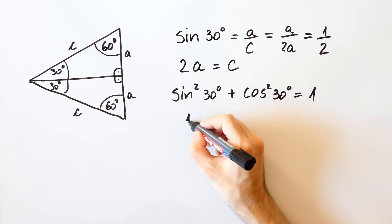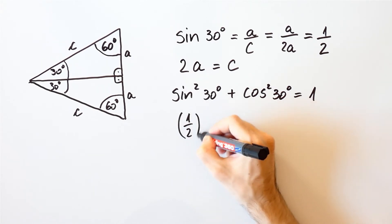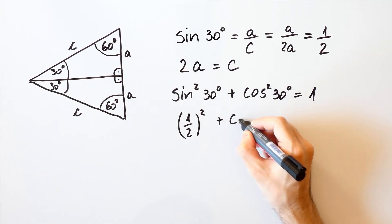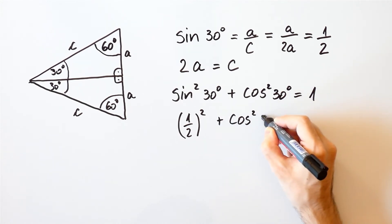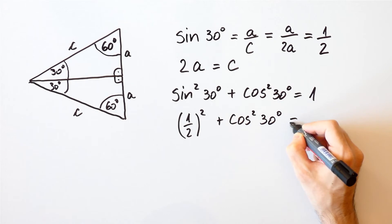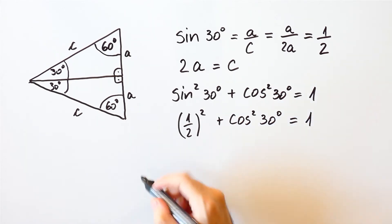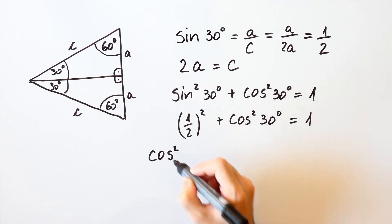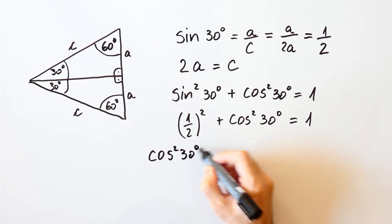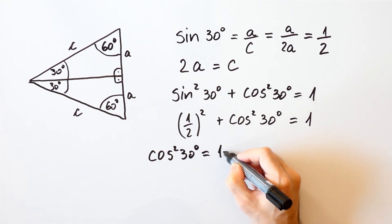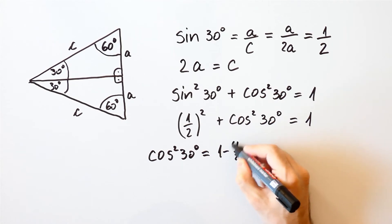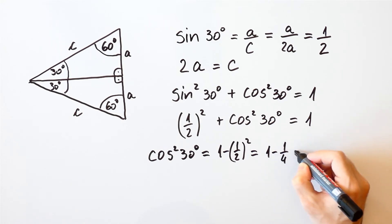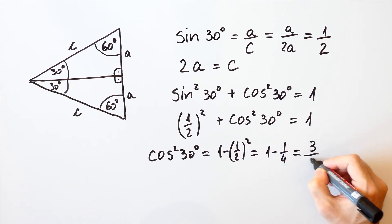So, 1 over 2 squared plus the cosine squared of 30 degrees is equal to 1, and that means that the cosine squared of 30 degrees is equal to 1 minus 1 over 2 squared, which is equal to 1 minus 1 over 4, and that is equal to 3 over 4.